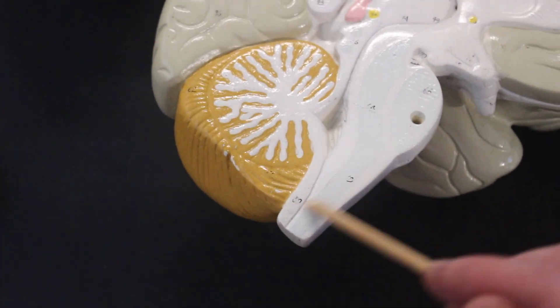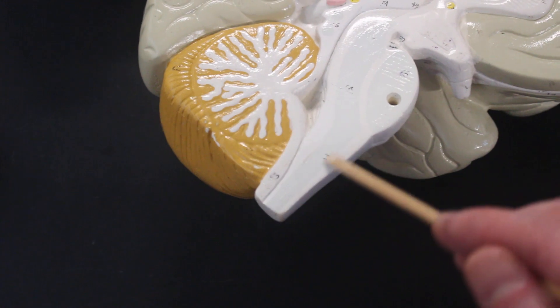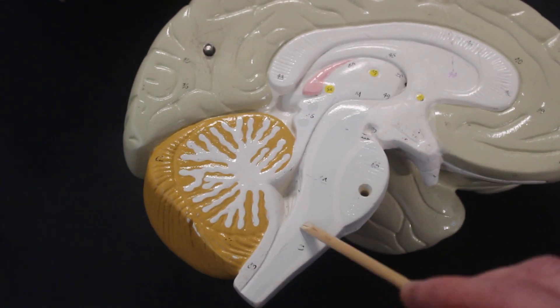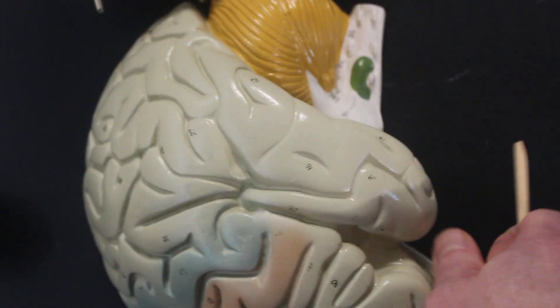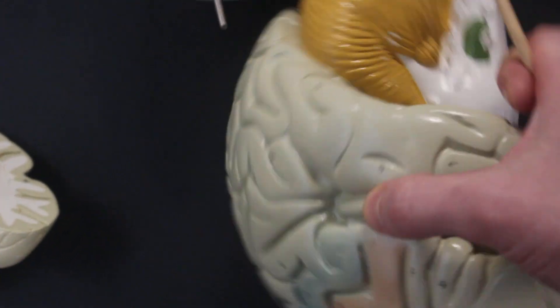This area here is the pons. And this area is the medulla oblongata. So this is the medulla oblongata. The medulla oblongata has on this other side, this little bump here called the olive. Oh, look, it's green on this model.